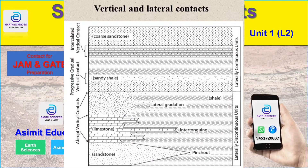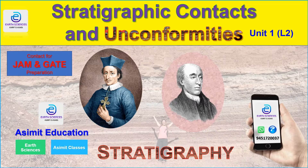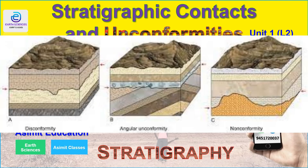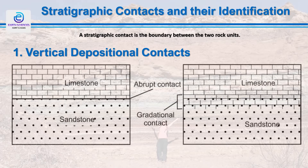This contact is generally vertical, but it can also be lateral when one rock abuts another horizontally. These are normal types of depositional contacts, but there can be others that are intrusive or structural in nature. In simple words, the stratigraphic contact is the boundary between two rock units.